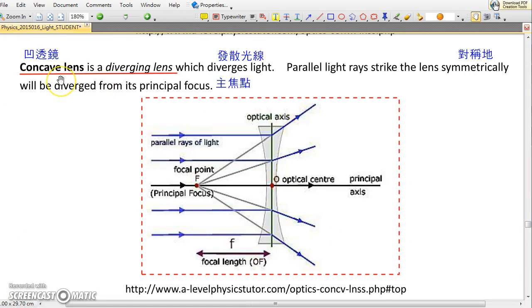Similarly, a concave lens diverges light. It is a kind of diverging lens. Parallel light rays strike the lens and then they will be diverged from the principal focus.